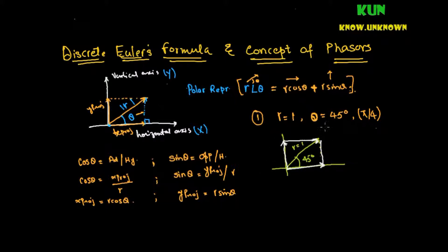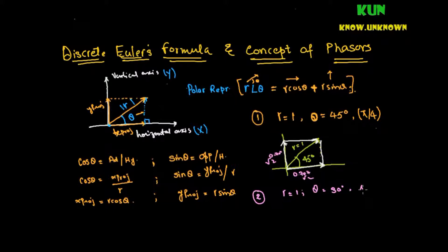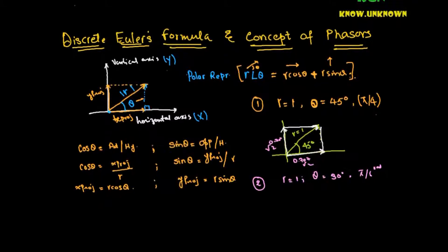Last time we saw that if r equals 1 — the length of the vector equals 1 — and the angle is 45 degrees, then the projection value on both axes will be 0.707, which is the square root of 2 over 2. Now let me take one more example. Let's take r equals 1 and theta equals 30 degrees, which is pi by 6 in radians.